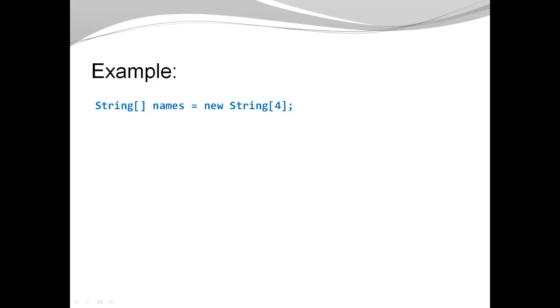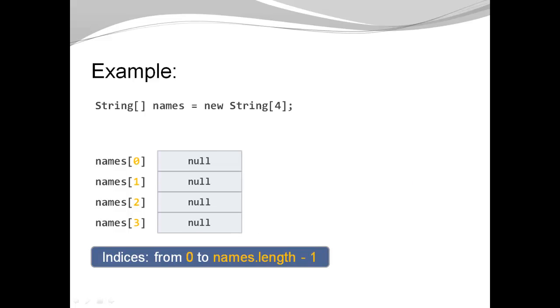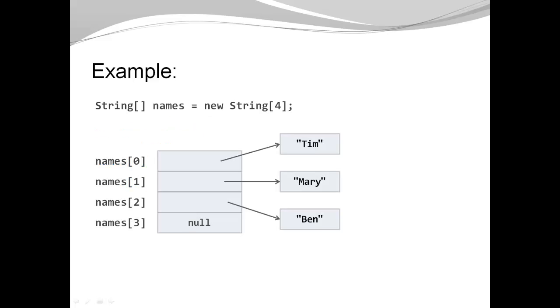Now let's look at a string array. It has the name names, and it is initialized with a new string array of size 4. You can see the string array is initialized with null, because string is a reference type, and that is the default value. My indices range from 0 to names.length minus 1. And when I enter some actual names, let's say, Tim on index 0, Mary on index 1, and Ben on index 2, then my array is going to reference the actual string objects.